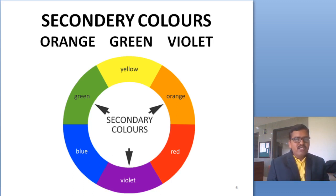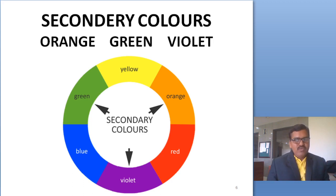Yellow color is a primary color. Red color is a primary color. Blue color is a primary color. Here, blue and yellow mixed together make green, which is a secondary color. Yellow and red mixed together make orange, which is a secondary color. Blue and red mixed together make violet — also called purple color — which is a secondary color.